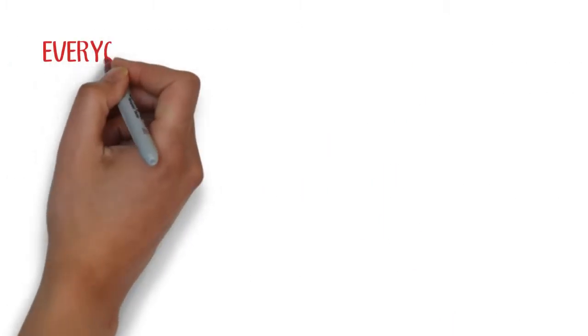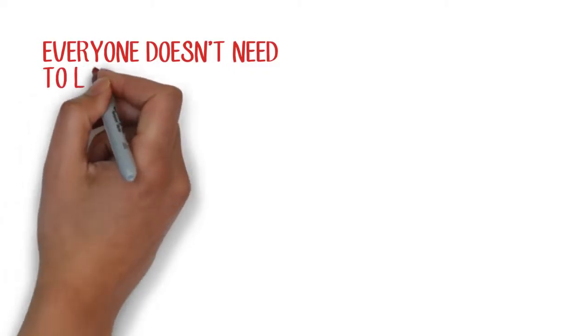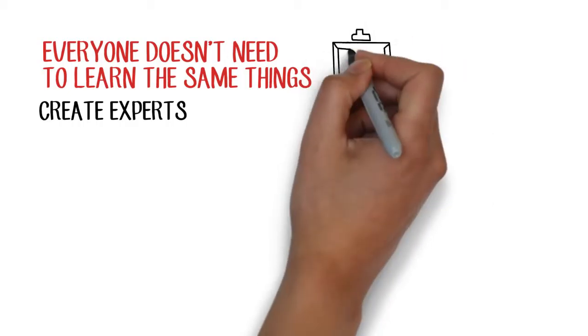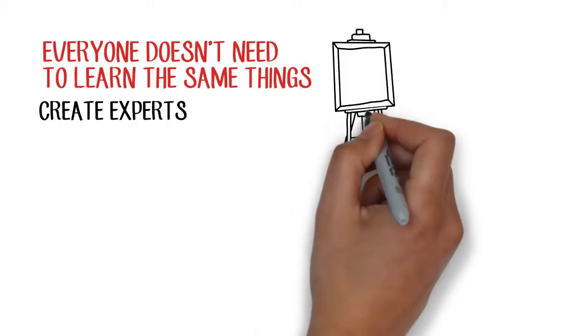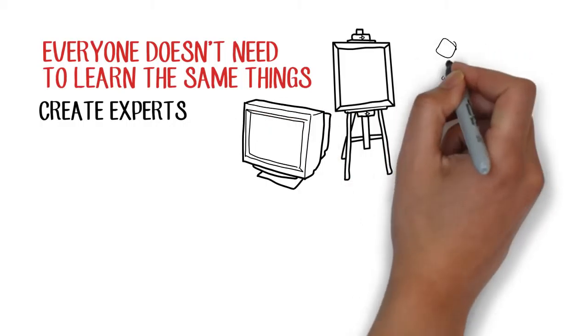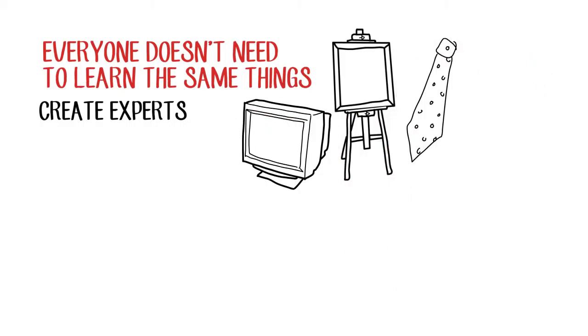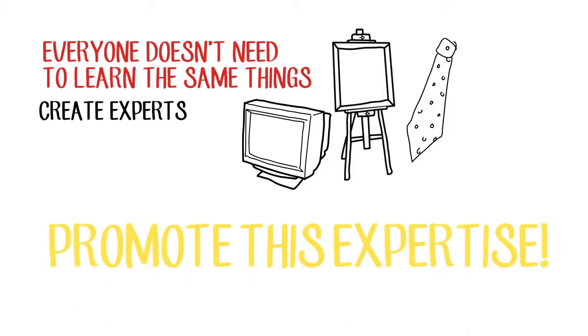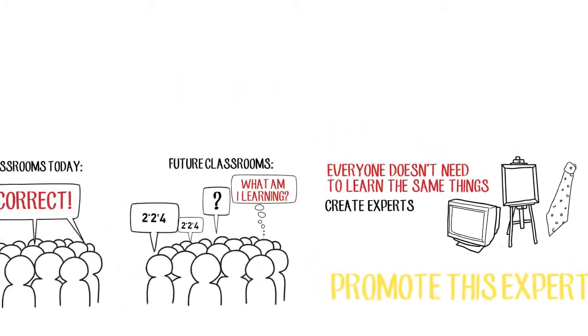We need classrooms where instead of making sure that everybody learns exactly the same thing, different people become experts in different areas. Someone might be better at the artist's side of the problem, someone at the computer programming side, someone at the fabrication side. How can we promote this distributed expertise instead of forcing everybody to learn exactly the same things?